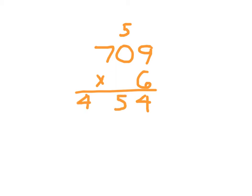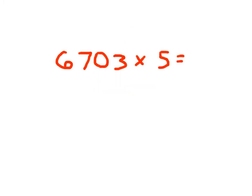And 6 times 7, which is 42. 709 times 6 equals 4,254. If a problem is given to you from left to right, please rewrite it so that it is in vertical form so that you can go through those steps.